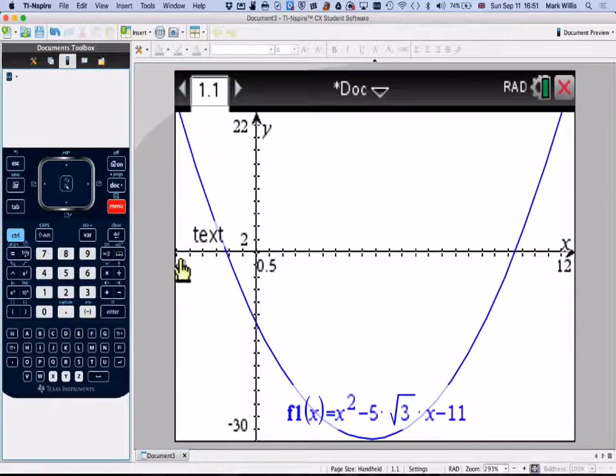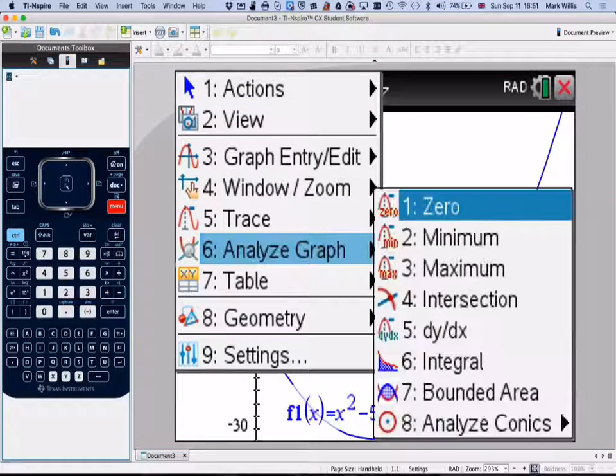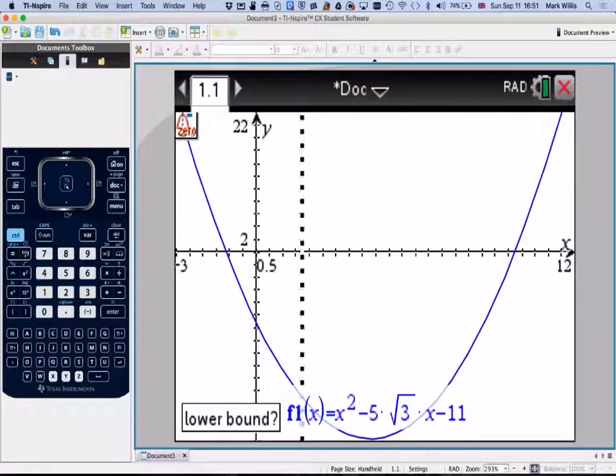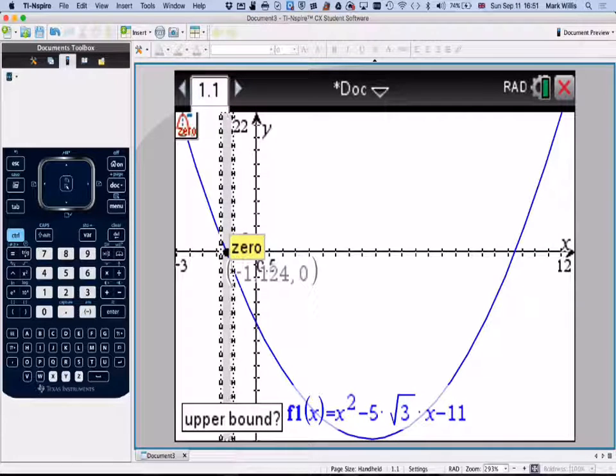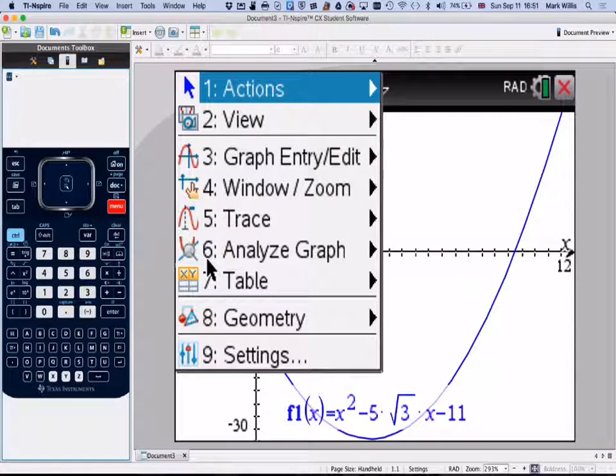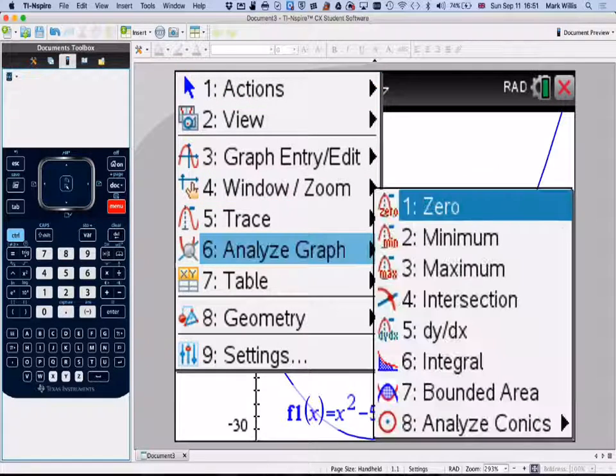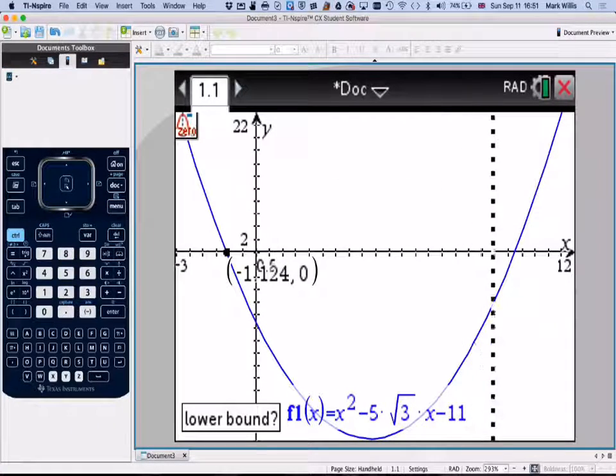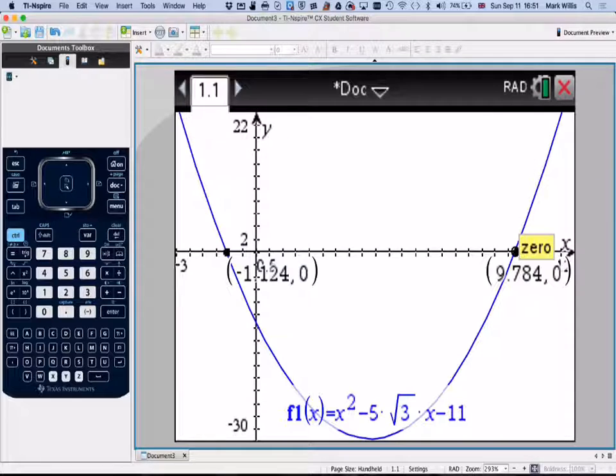Okay so we get a reasonable looking graph there. Right, need to find where it cuts the axis, so it's menu, number 6, analyse the graph. We want to know where the zeros are, to the left and to the right. That's a negative one, so we're going to ignore that one. Menu, analyse the graph, 0, to the other one, to the left, to the right, and we've got this other one, which is 9.784. This one's no good. We can't have a negative x. It doesn't mean anything for a triangle.